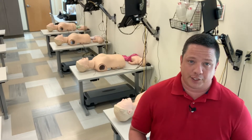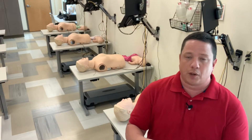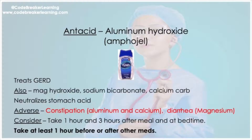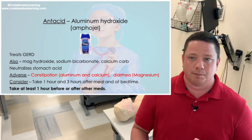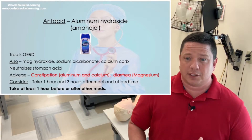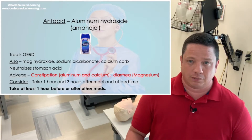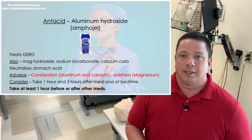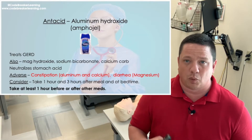The next GERD medication is an antacid. There are multiple forms: magnesium hydroxide, sodium bicarbonate — which is a buffer for acidic situations — and calcium and aluminum. Calcium and aluminum may cause constipation, so teach patients fluid, fiber, and exercise. Magnesium, on the other hand, may adversely cause diarrhea, so watch out for that.